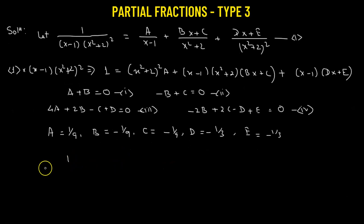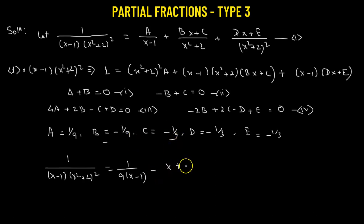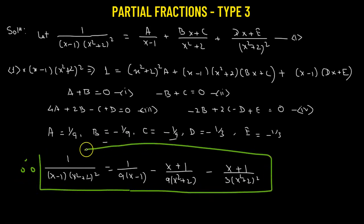Substituting these values back into equation 1, we get: 1 over (x minus 1)(x squared plus 2) squared equals 1 over 9(x minus 1), minus (x plus 1) over 9(x squared plus 2), minus (x plus 1) over 3(x squared plus 2) squared. This is how we have successfully resolved the given rational fraction into three partial fractions.